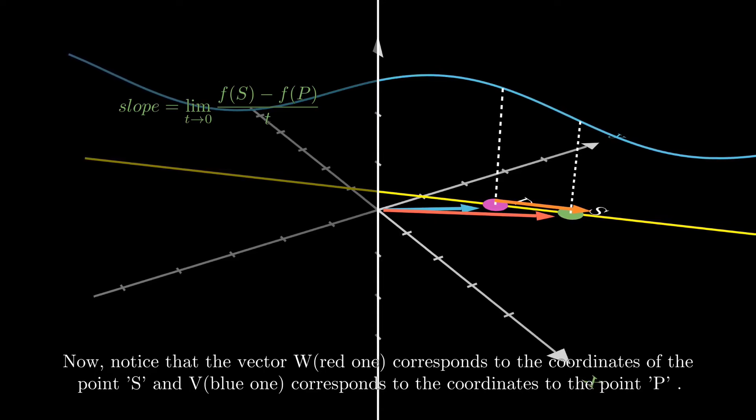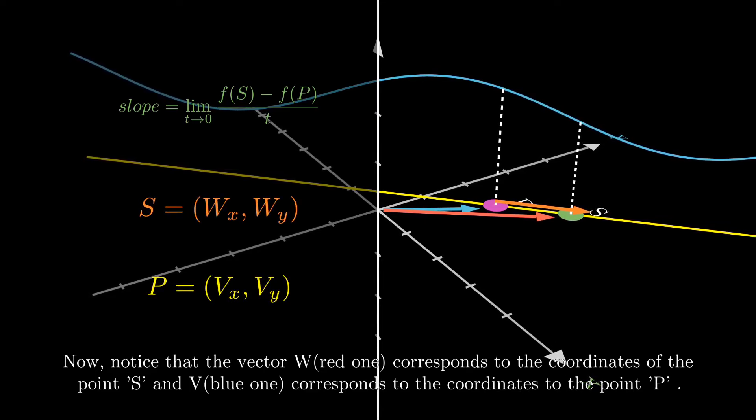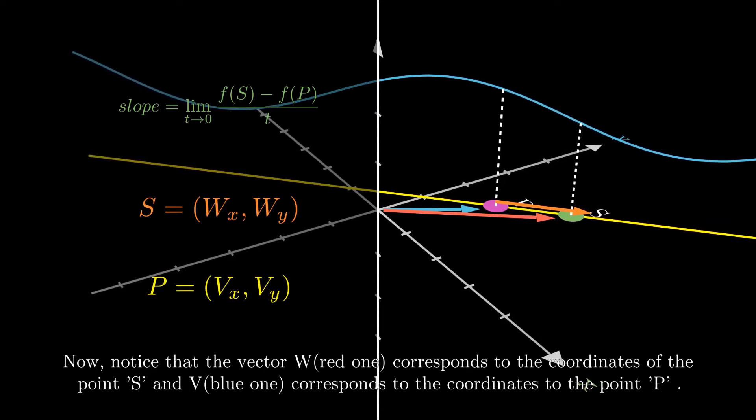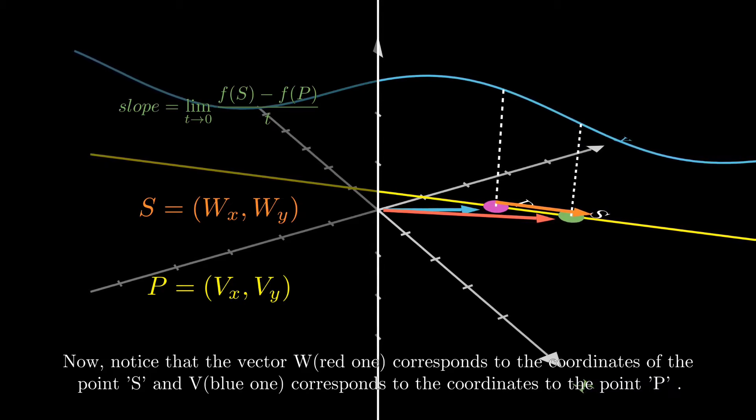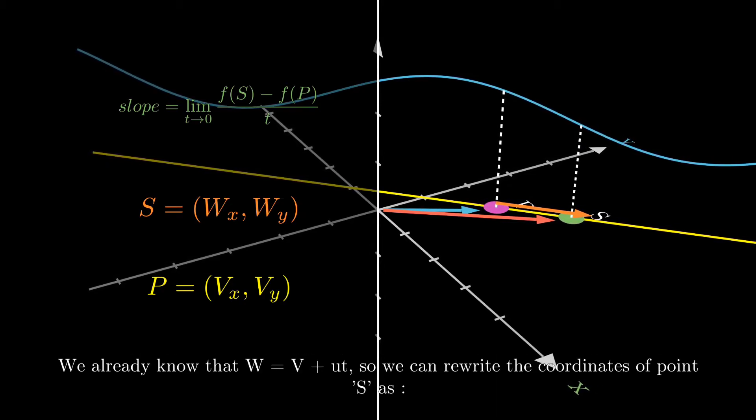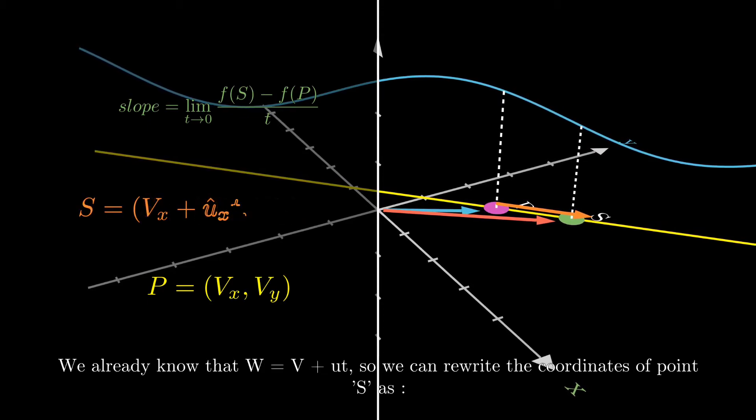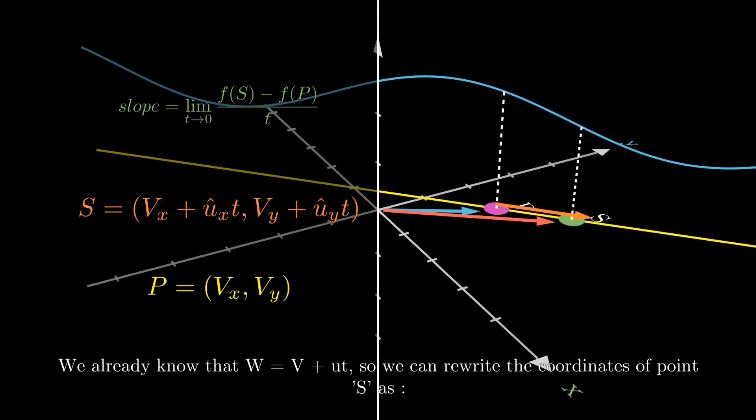Now, notice that the vector W corresponds to the coordinates of the point S and the vector V corresponds to the coordinates of the point P. We already know that W equals V plus U times T. So we can rewrite the coordinates of the point S as shown above.